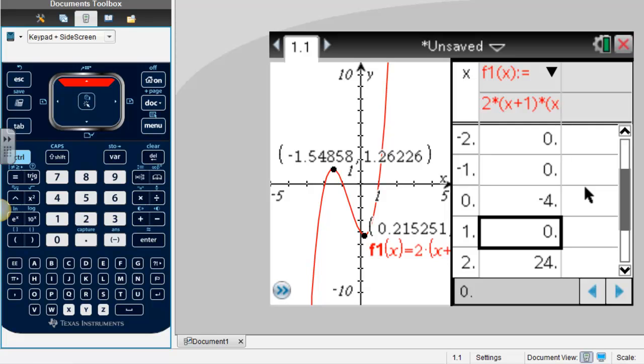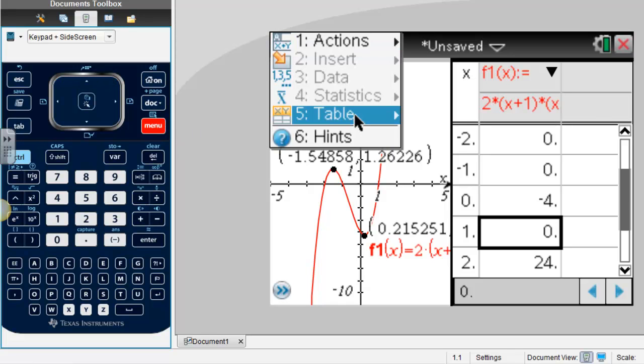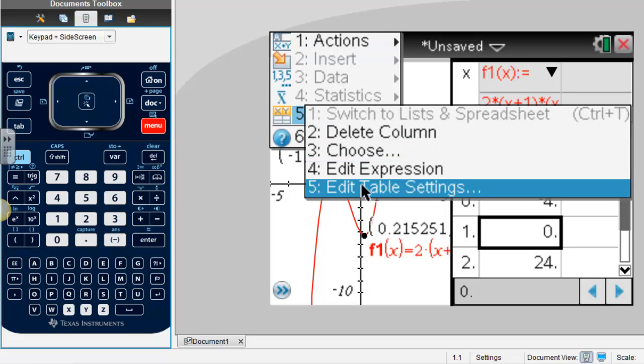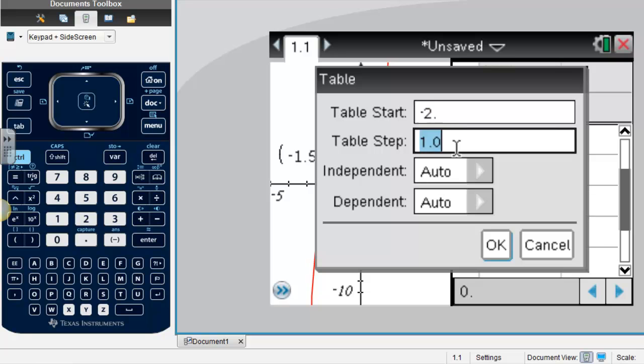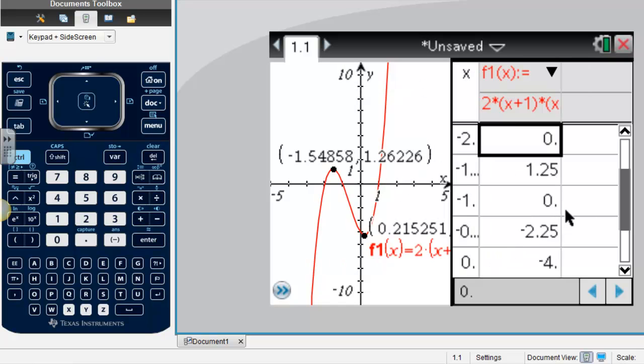...but that's all possible ways that we could go ahead and do that. If I wanted to find, like, half points, I could go to table and edit table settings, and instead of having a table step of 1, I could do a table step of 0.5, and you can see then that this, if I adjust it...